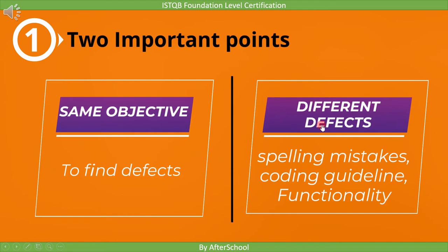What you need to keep in mind is that different testing finds different types of defects. For example, during static testing we can find spelling mistakes and violations of coding guidelines, which we cannot find during dynamic testing. But during dynamic testing, we can find defects related to functionality, which we may not find during static testing. So the objectives are the same, but they find different defects.